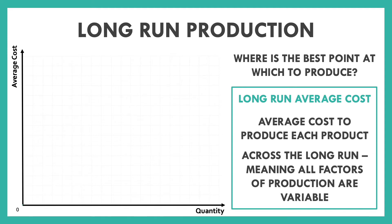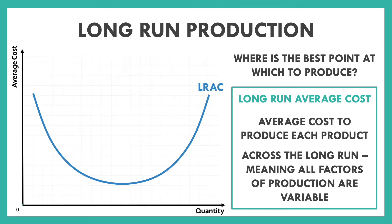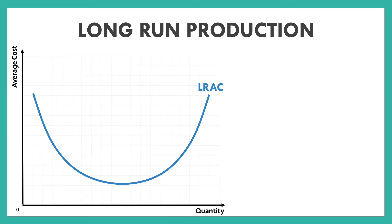Average cost is just, on average, how much did each product cost us to make? What we see is that our long-run average cost curve looks like a bowl or a letter U. The blue line goes down and then we hit a bottoming-out point, and then it comes back up. Why exactly is that? Why does our average cost per product go down, and then why does it go back up? We're going to split this into two parts: the decreasing part on the left and the increasing part on the right.